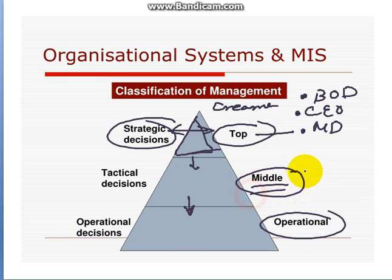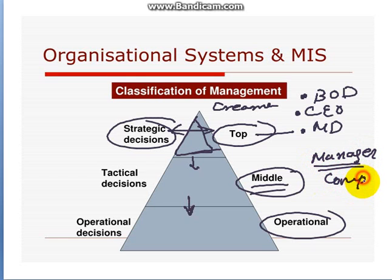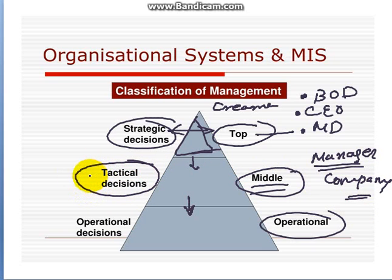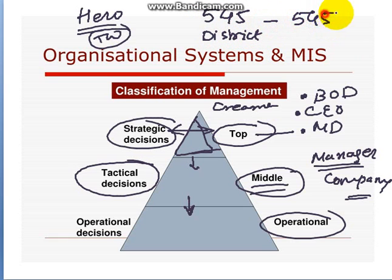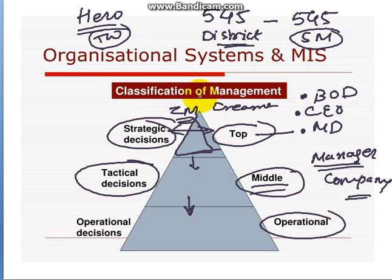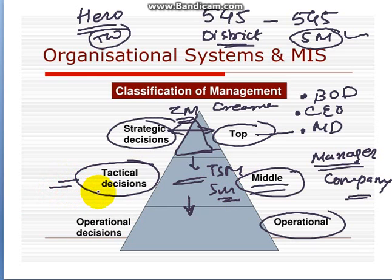At the middle level, managers are responsible for the everyday working of the company and deal with tactical decisions. For example, considering Hero as a two-wheeler sales company, there are 545 districts in India, so there are 545 sales managers — one for each district. Zonal and senior-level managers come under top-level executives, while sales managers and territory service managers fall under middle-level management, dealing with tactical decisions.